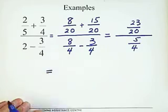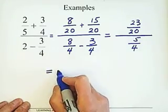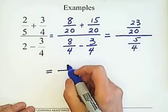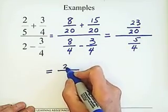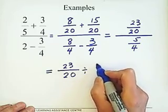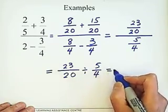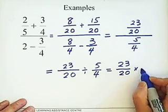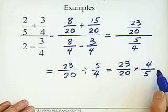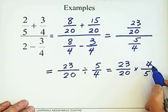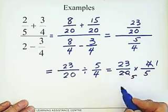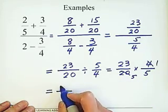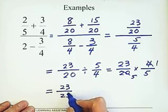We've finished step one — simplifying the numerator to 23/20 and the denominator to 5/4. Step two: write the complex fraction in division form as 23/20 divided by 5/4. Then follow the dividing fractions rule — flip the second fraction and change to multiplication. Simplify: 4 and 20 cancel, giving 1 and 5. Since 23 and 5 have no common factor, multiply: 23 × 1 = 23, and 5 × 5 = 25. The answer is 23/25.